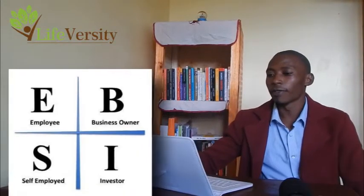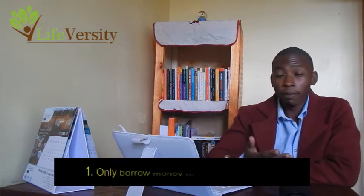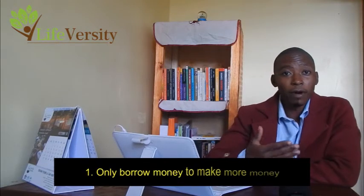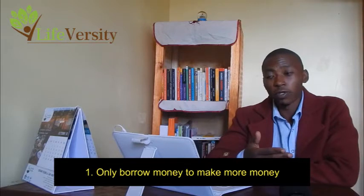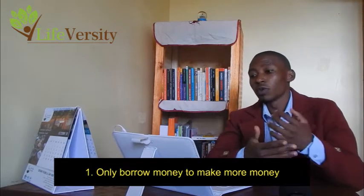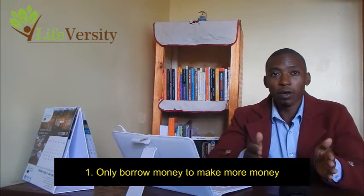There are three most important things you need to know in order to shift from the left side of the cash flow quadrant to the right side. These are basically how you manage your finances. The first one is debt or borrowing money. When you are borrowing money either for business or for personal use, ensure that you stick on good debt.